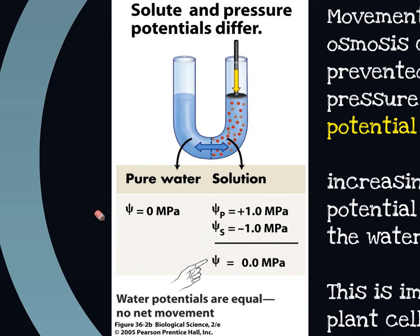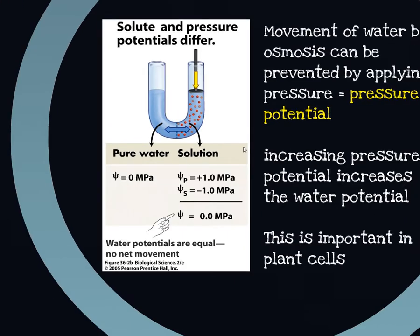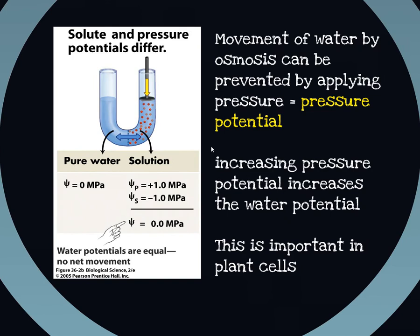The really important thing here is that this has a real application to plants. The movement of water by osmosis can be prevented by applying a pressure — pressure potential. Increasing the pressure actually increases the water potential. Unlike solute potentials, which are always negative, pressure potentials are always positive. It's the combination of the two that gives you your overall water potential.